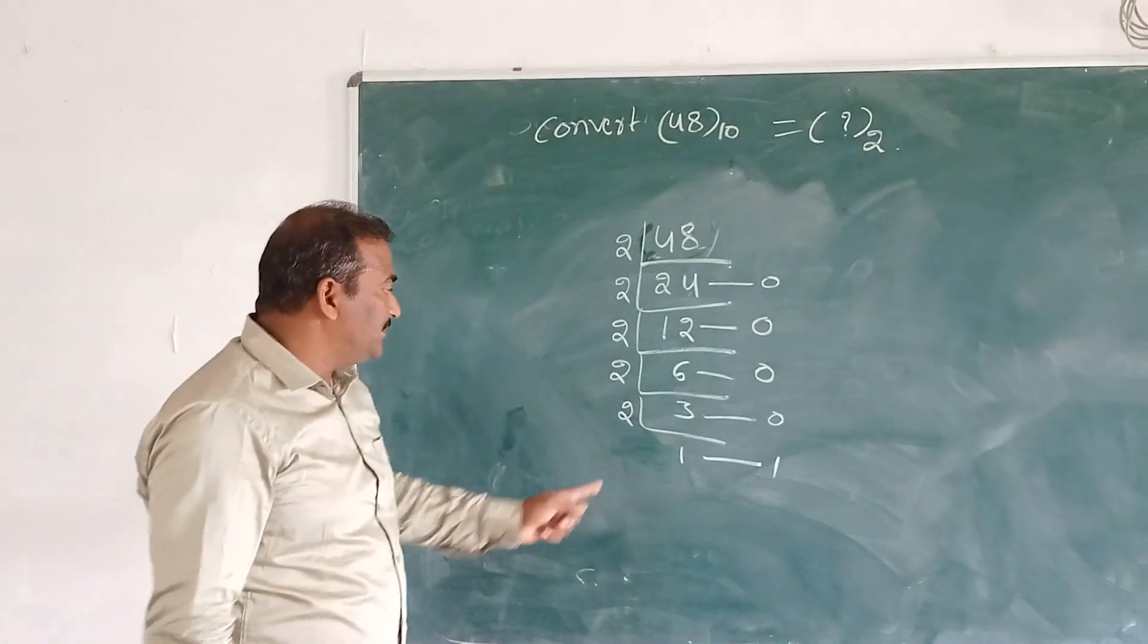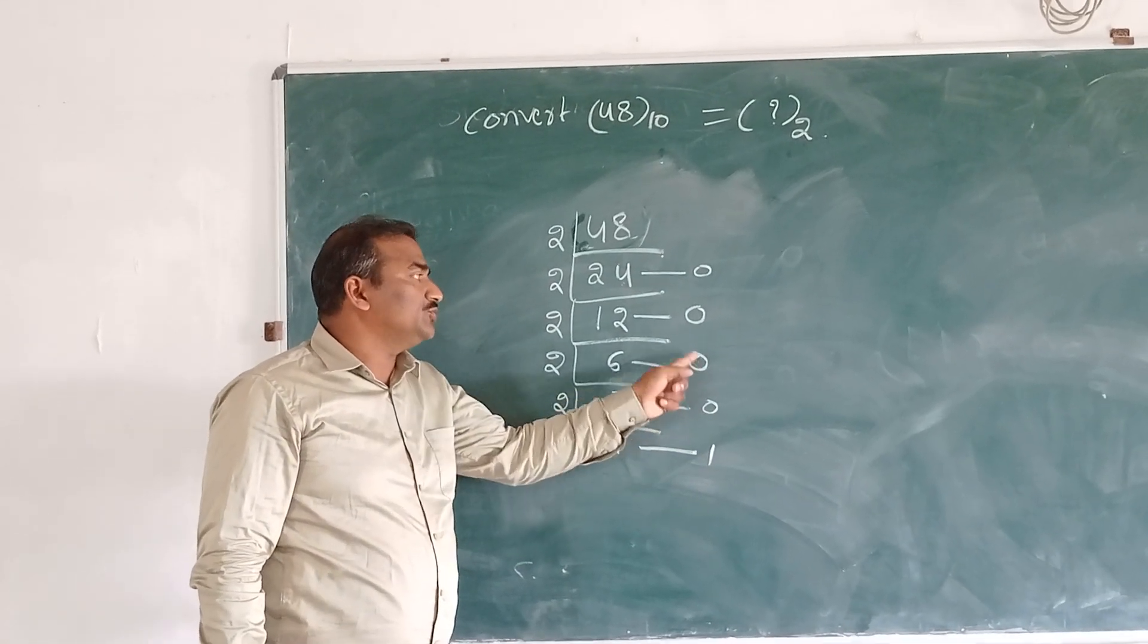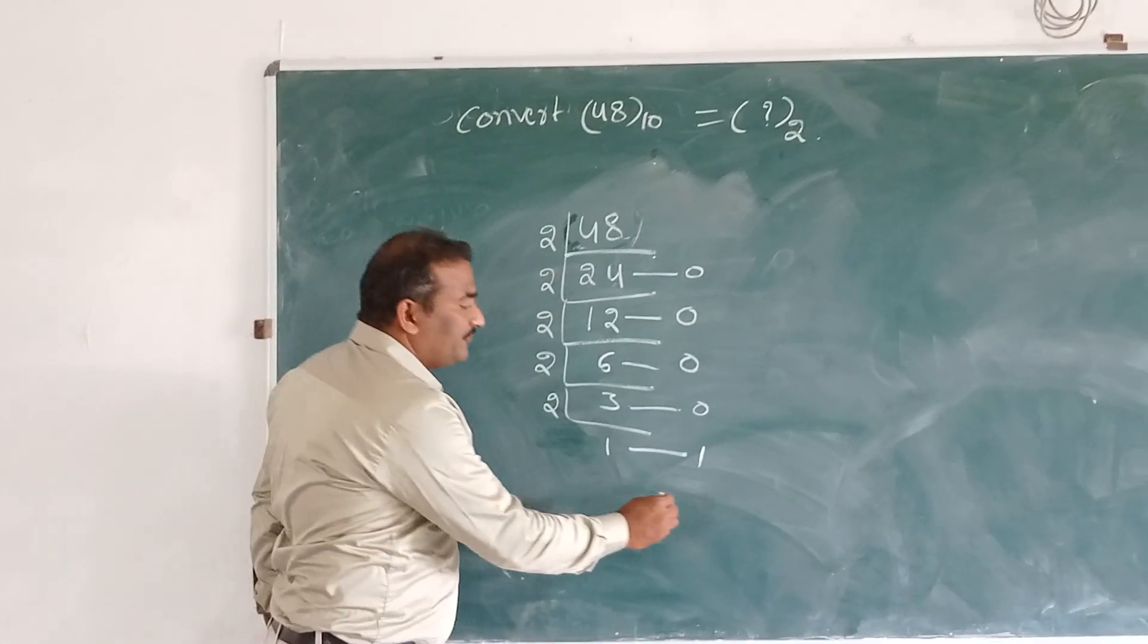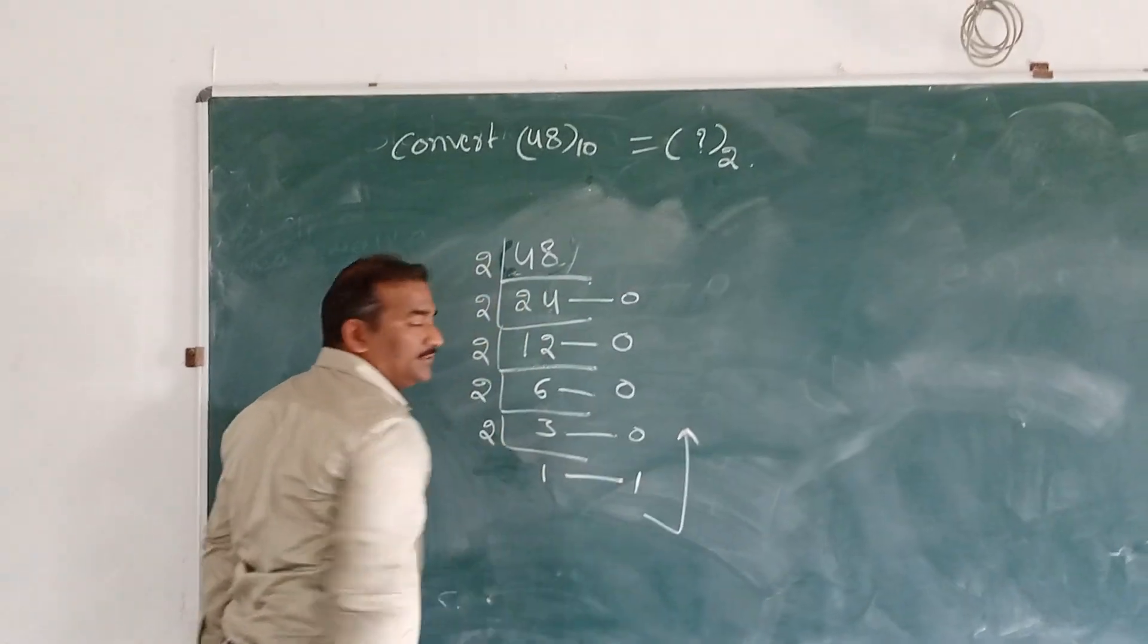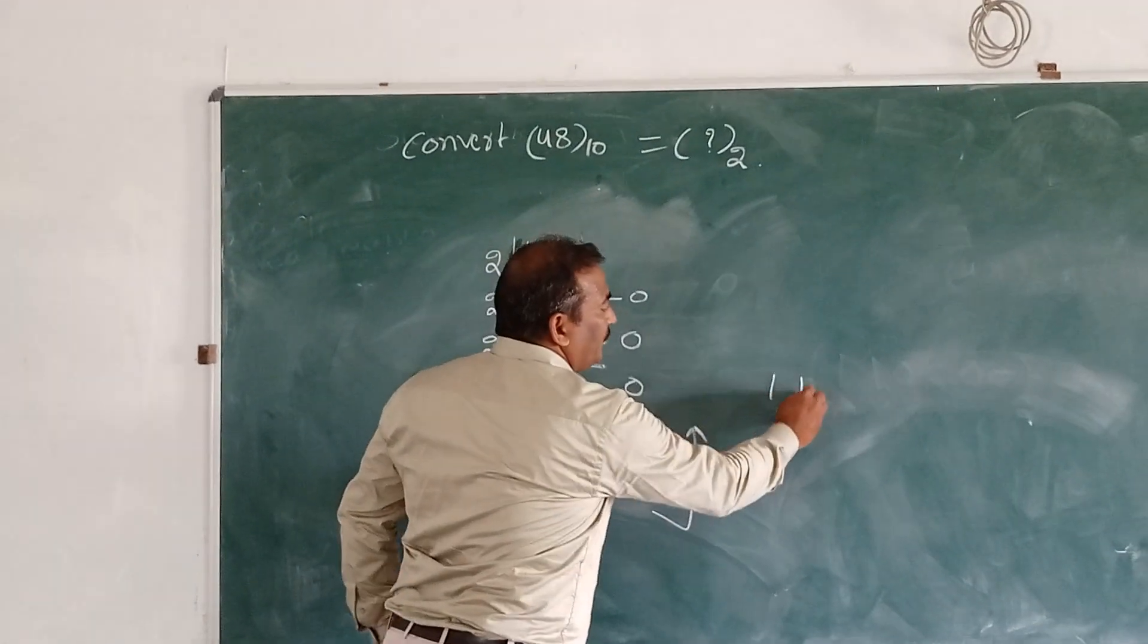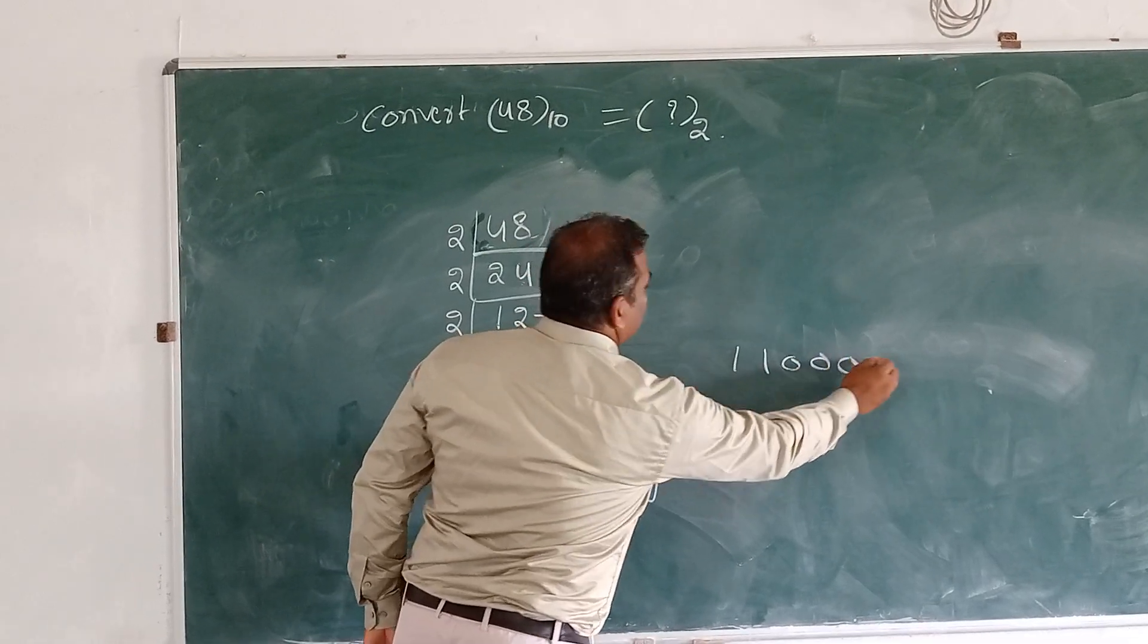The remainders are 0, 0, 0, 0, 1, 1. These remainders are taken from bottom to top, so: 1, 1, 0, 0, 0, 0.